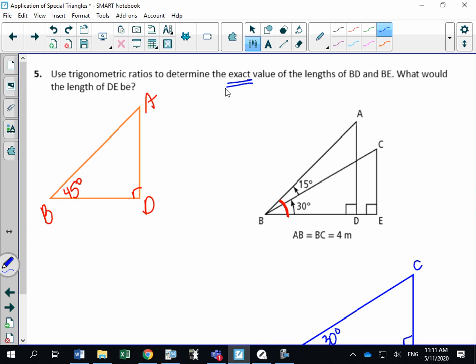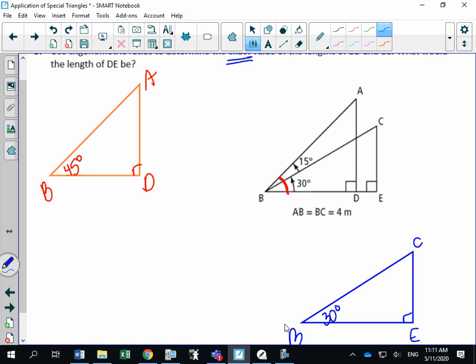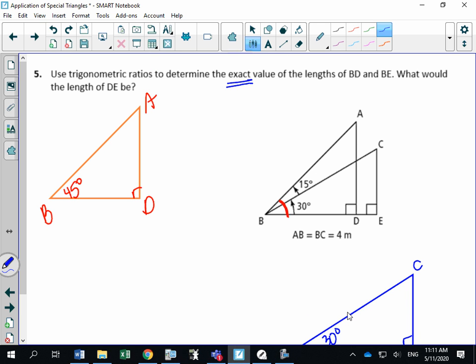Now, remember when I say the words exact, that means special triangles, then the numbers that you'll always be given are 30, 45 and 60. Those are the ones that you were told that you need to know those special triangles. So if I look here, I've got a 45 degree and I've got a 30 degree. So if I want the length of BD, I'm going to call that X, and what did they tell me? They said AB is equal to BC, so here's AB, that's BC and that's four meters.